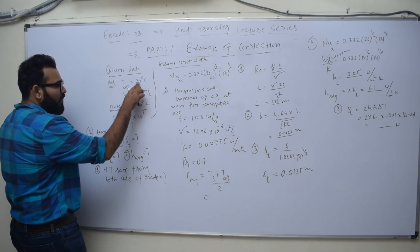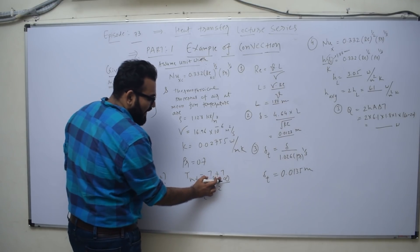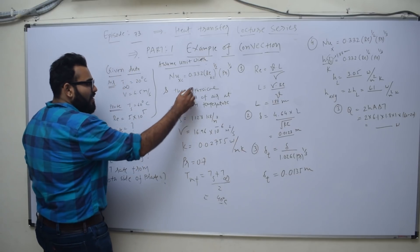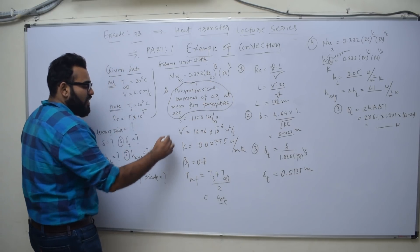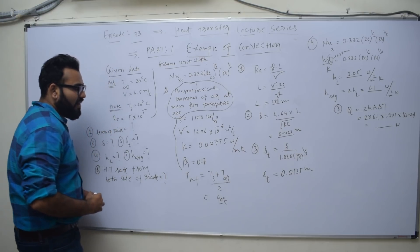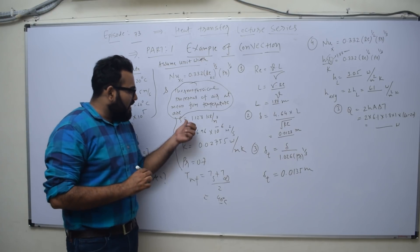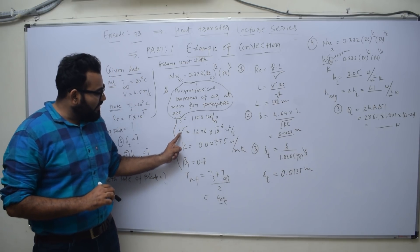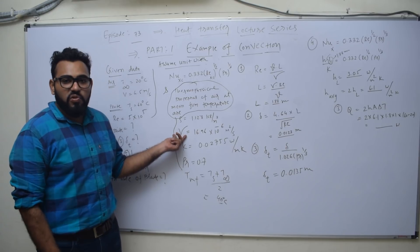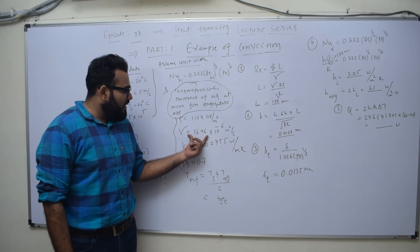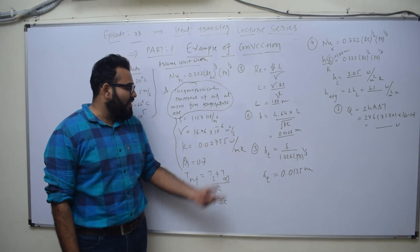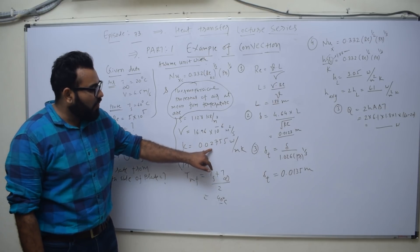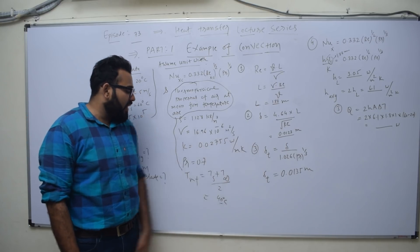Surface temperature is 60, plus 20, which is 80 divided by 2, equals 40 degrees C. At 40 degrees C, the properties given for air at the film temperature are: density = 1.12 kg per meter³, kinematic viscosity = 16.86 × 10⁻⁶ m²/s, thermal conductivity = 0.02755 W/m·K, and Prandtl number = 0.7.